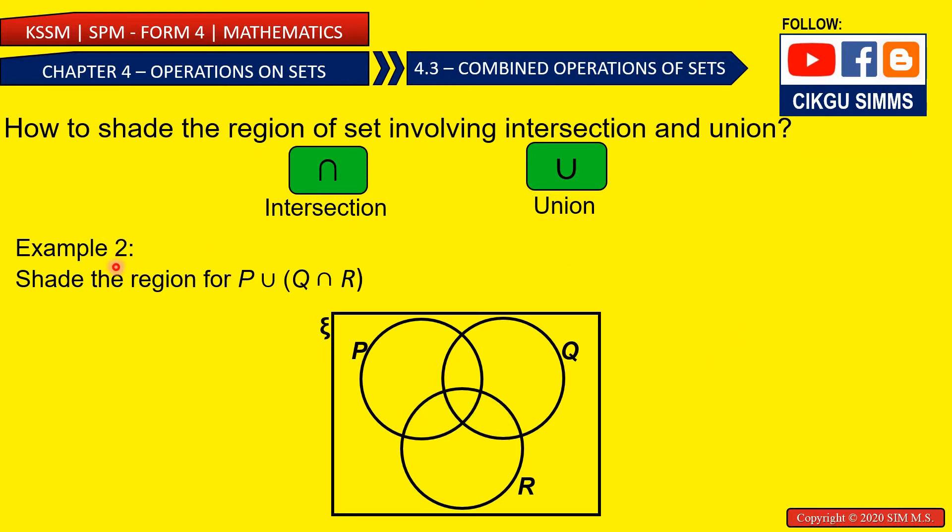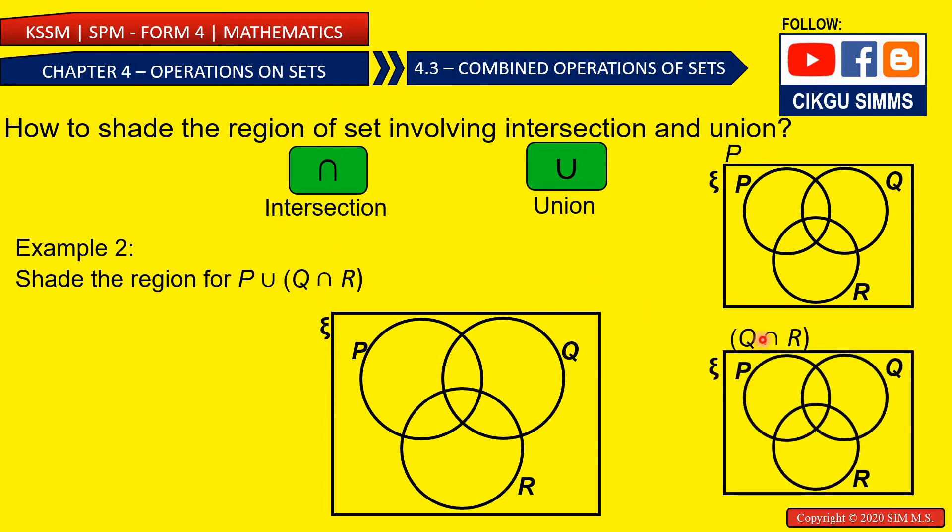So let's see the second example. If you think you can do, you can pause the video and you can try. So you need to do the first thing, P, and then you need to do Q and R. And then you union. So the first part is P. The second part is Q and R, the intersection of Q and R. And then these two answers, you are going to union.